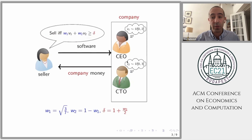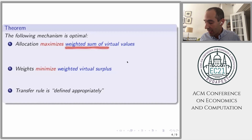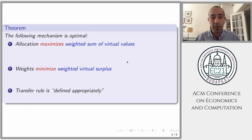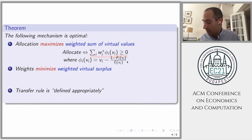The main theorem of this paper characterizes what optimal mechanisms look like. The optimal mechanism is characterized in three steps. Step one specifies the optimal allocation rule: it maximizes a weighted sum of agents' virtual values. The second part specifies what these weights look like. Part one says that the optimal allocation is to allocate the product if and only if a weighted sum of agents' virtual values, according to some weights W*, is positive, where the virtual values φ_i(v_i) are defined according to the standard definition of virtual values.